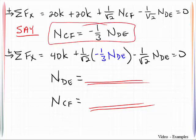Remembering that one of those is going to be a third of what the other is. We can substitute that into the sum of forces in the x direction and solve for NDE which will be 42.42 kips.